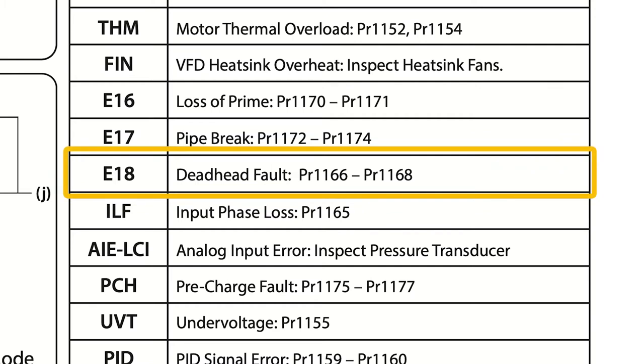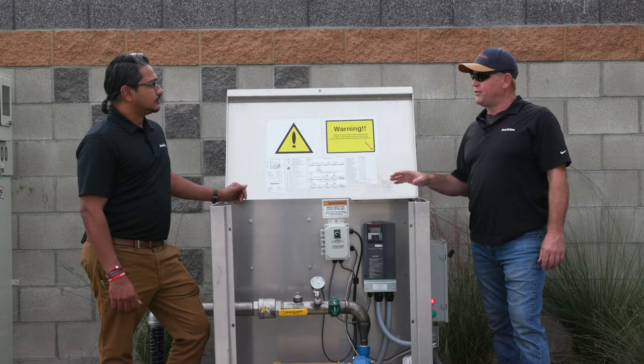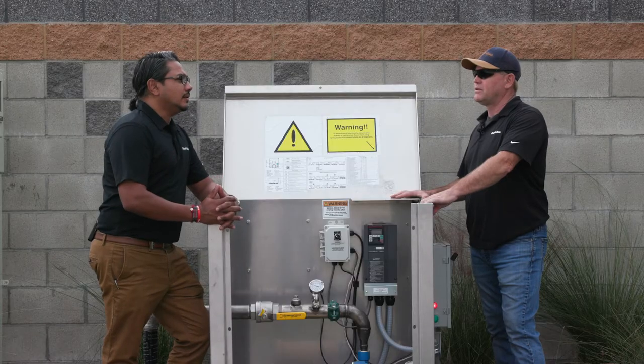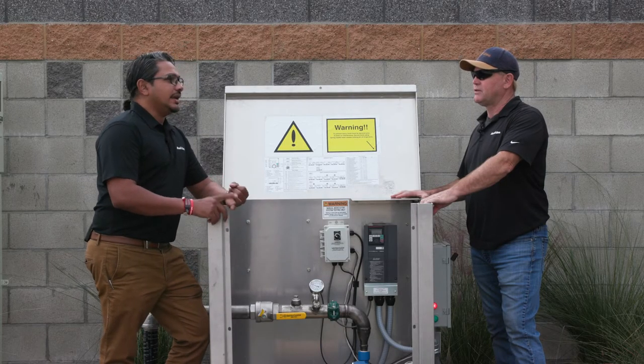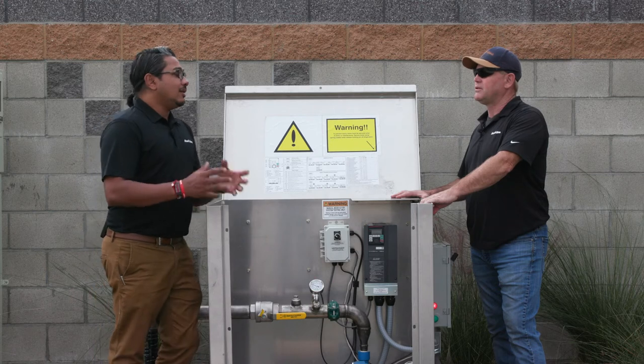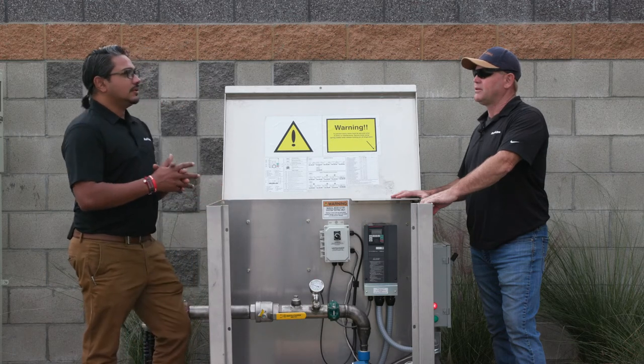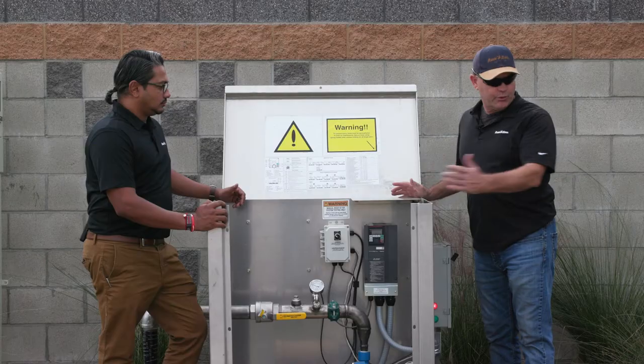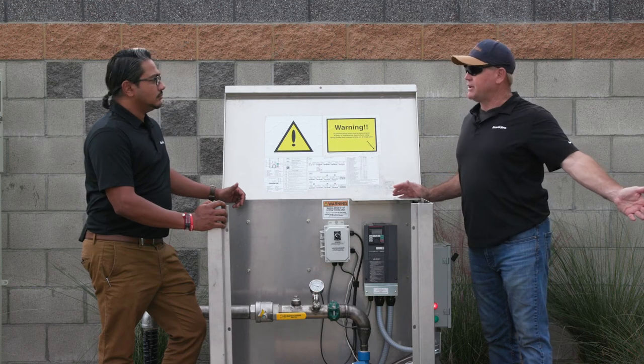The first scenario we're going to talk about is Fault 18, which is deadheading. What does that mean? It could be two scenarios: no flow or very low flow. It could be a master valve is shut, a gate valve is shut, or a valve is partially open. So the pump is running at its max performance but there is no way to push that water out anywhere.